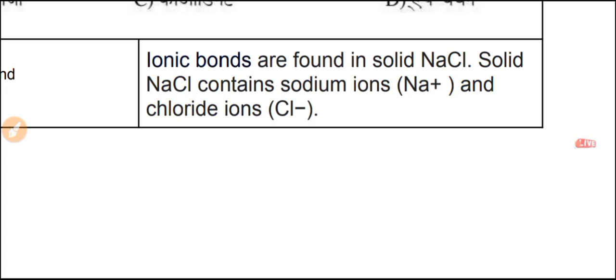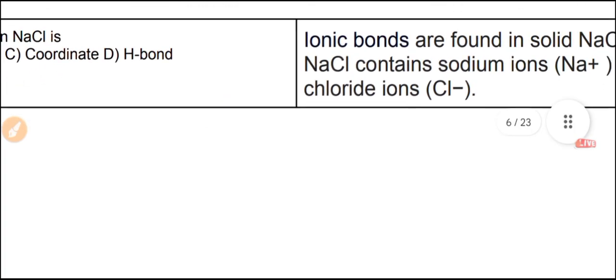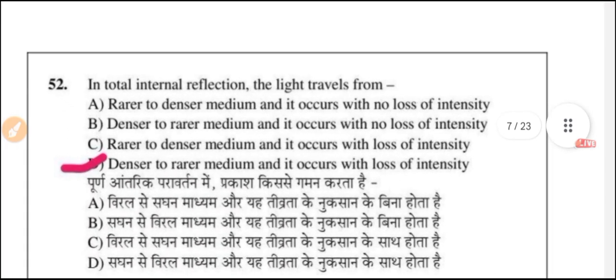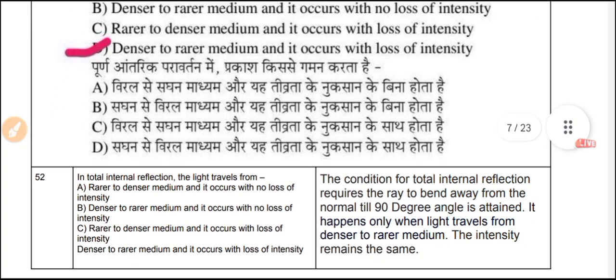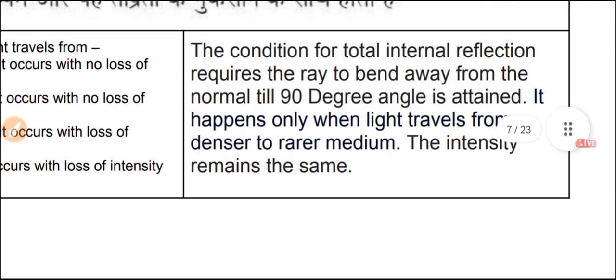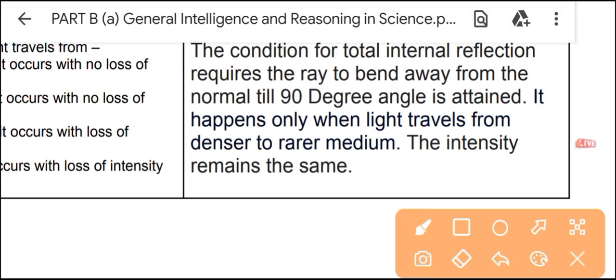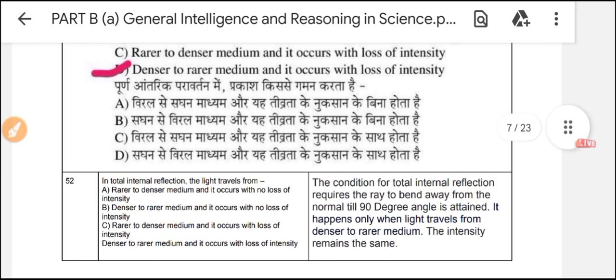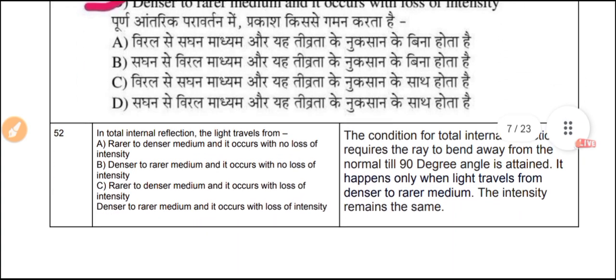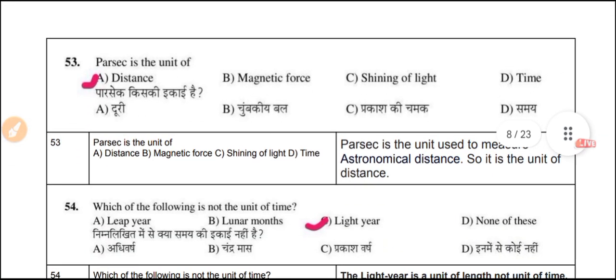Question 52: Total internal reflection — light traveling from a denser to a rarer medium undergoes total internal reflection with loss of intensity. The condition for total internal reflection requires the ray to bend away from the normal until it reaches 90 degrees. This only occurs when light travels from a denser to a rarer medium.